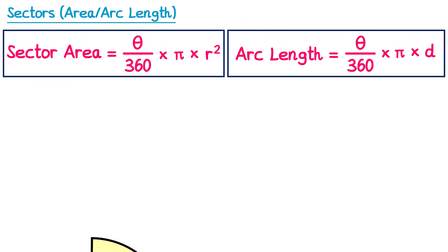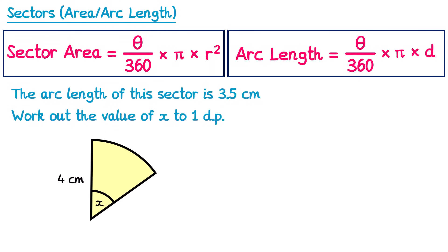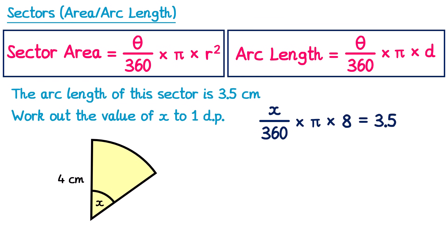In these next two questions we need to work backwards. Here we have a sector and we're told the length of the arc is 3.5cm, and we need to work out the value of x, which is the angle. Since the question mentions arc length, let's write out the arc length formula. We know x is the angle, so let's replace theta with x. We have the radius of 4, so the diameter will be 8. Normally we'd type this into the calculator, but that won't work since there's an x in there. We're told the arc length is 3.5, so this expression must equal 3.5 — giving us an equation to solve.